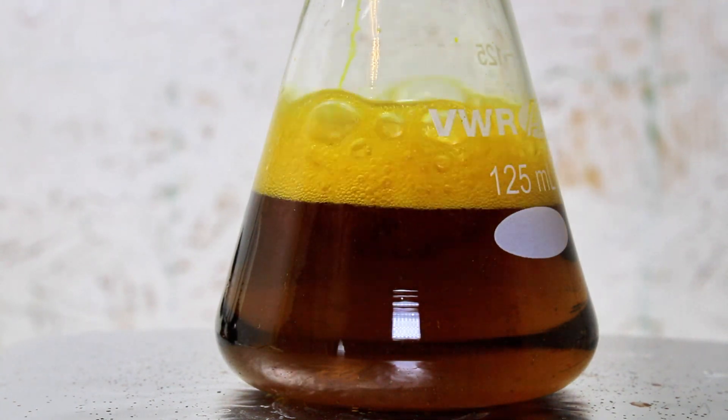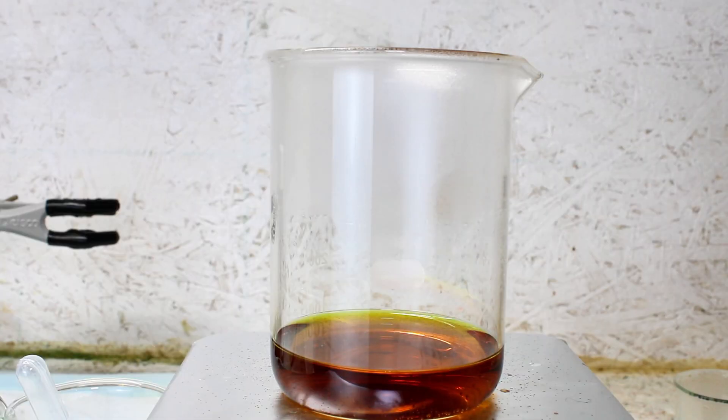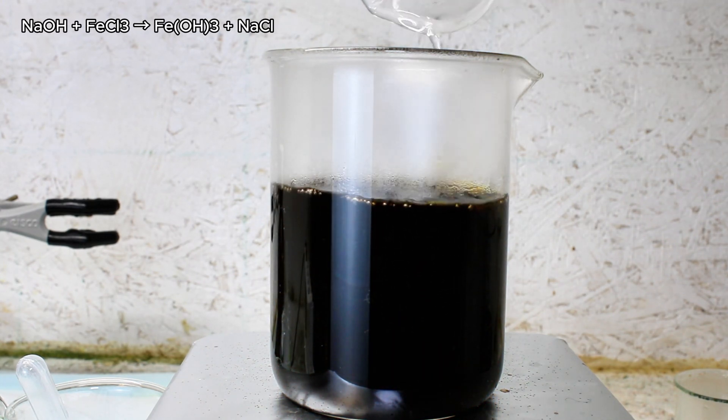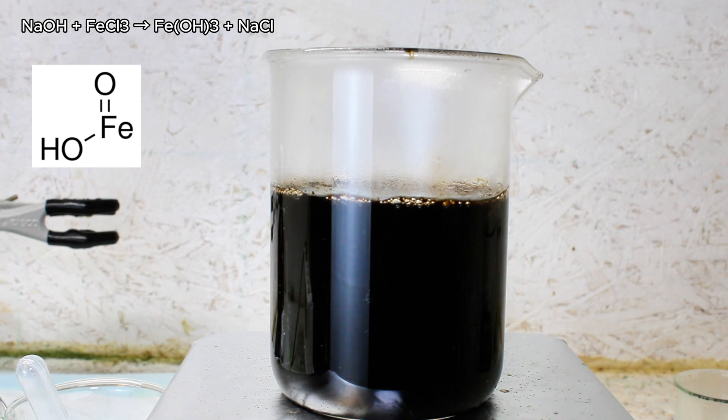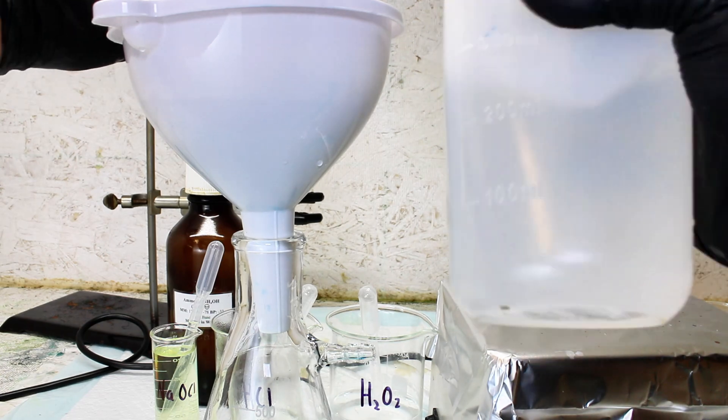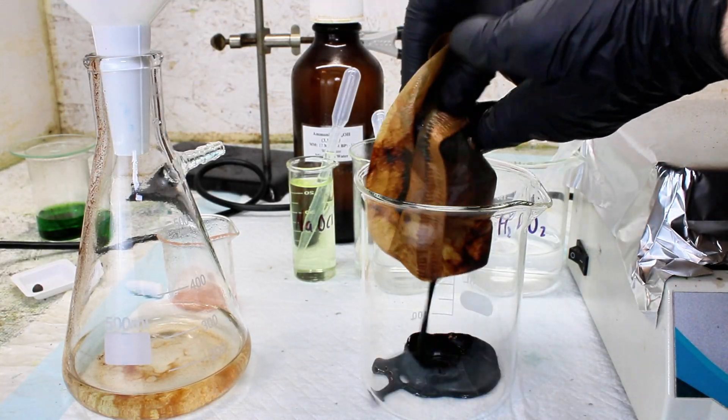Next, I go ahead and pour my iron(III) chloride solution into a beaker and add some 2 molar sodium hydroxide to form the insoluble iron(III) hydroxide, which is a dark brown solid that's sometimes used to treat iron deficiency. This is then transferred to another beaker once most of the water is filtered off.